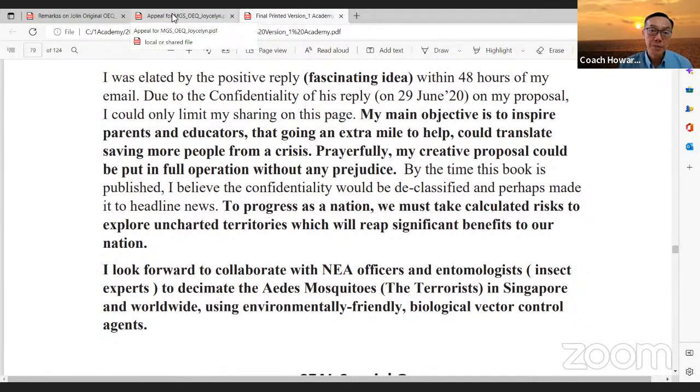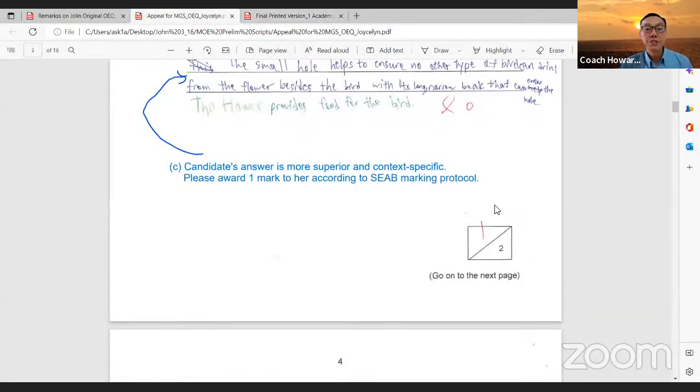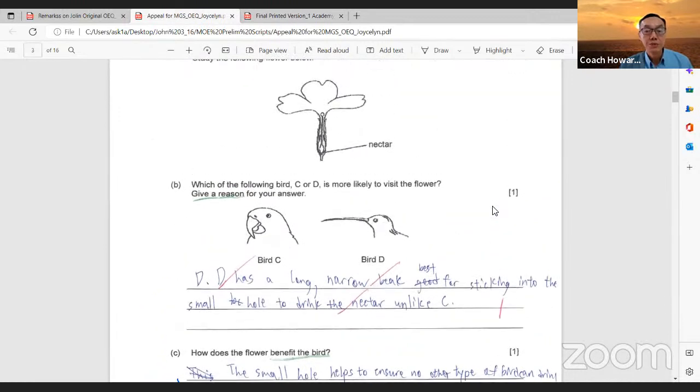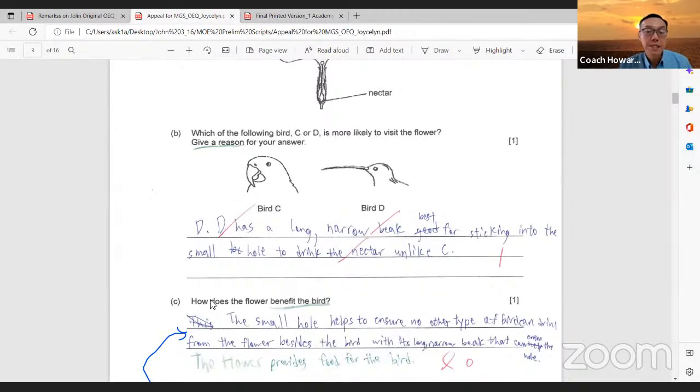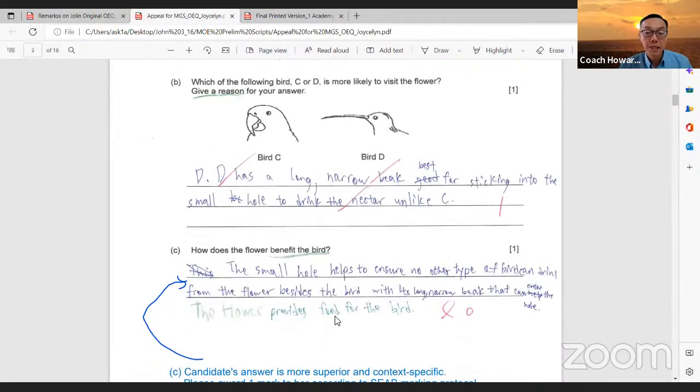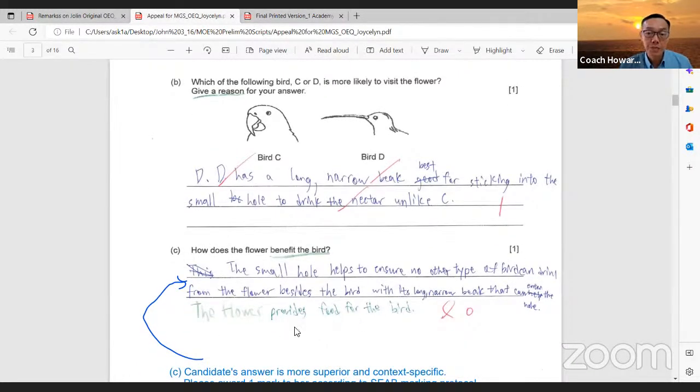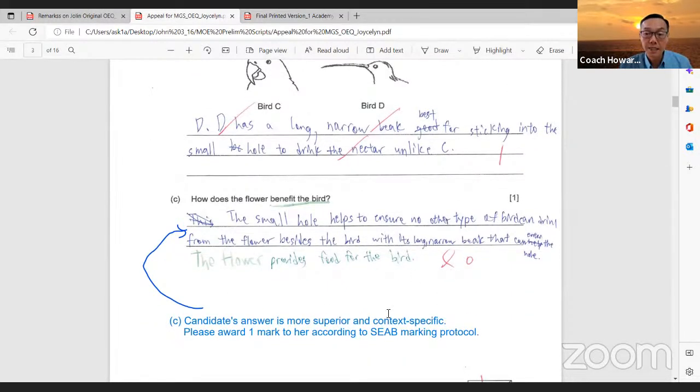Let's continue to see a next paper which I have analyzed today for another student. This is also from a SAP school. Give a reason for your answer. Which of the birds? The student answered correctly. It says, how does the flower benefit the bird? The model answer provided by the school is the flower provides food for the bird. But I actually appreciate this student's answer. I think this candidate has a more superior answer and is more context-specific.